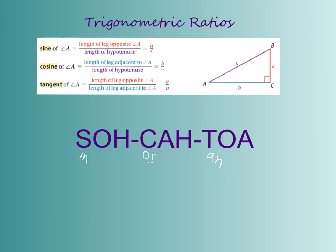For sine, I need to have the opposite and the hypotenuse, which follows along exactly with what we had written in the definition at the top. For cosine, adjacent and hypotenuse. And for tangent, opposite and adjacent.